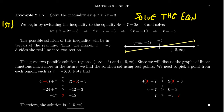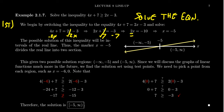So if you ignore the inequality symbol and treat it as an equal sign, you solve it. Looking at 4x plus 7 equals 2x minus 3, I would subtract 2x from both sides — the 2x cancels — giving us 2x plus 7 equals negative 3. Then subtract 7 from both sides; the 7s cancel, giving us 2x equals negative 10. Divide both sides by 2, and we get x equals negative 10 over 2, which is negative 5.